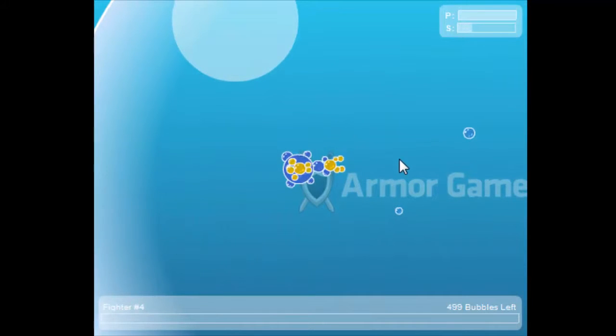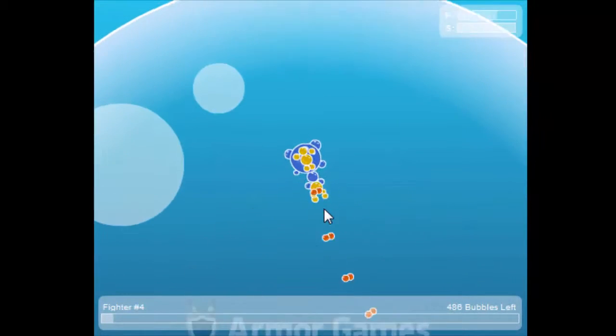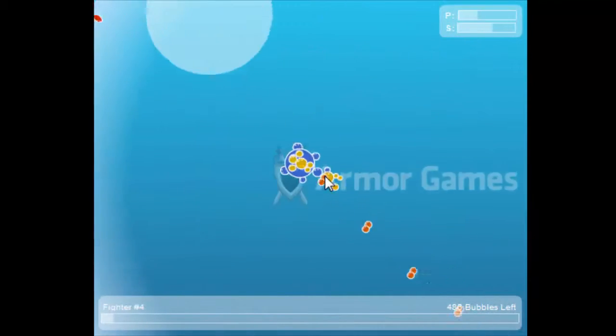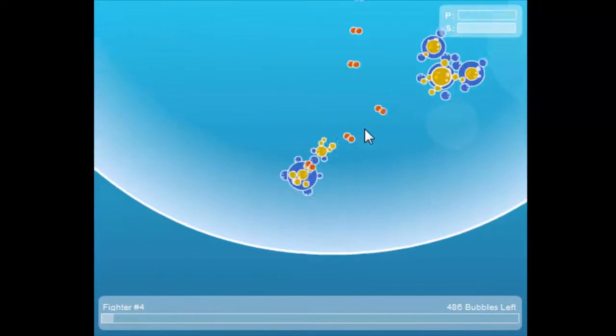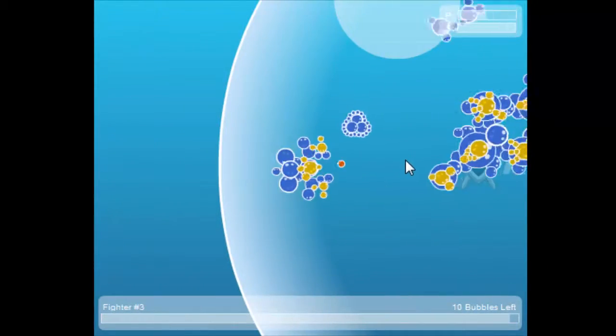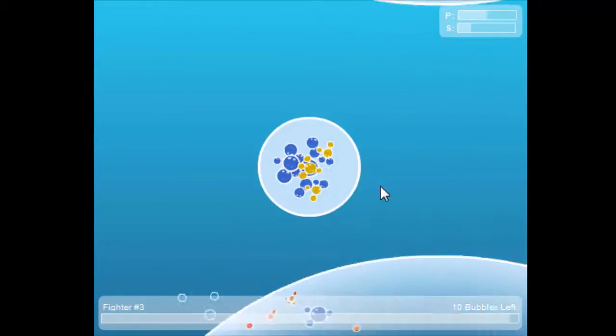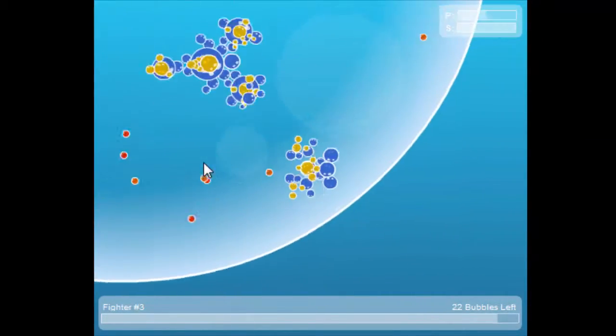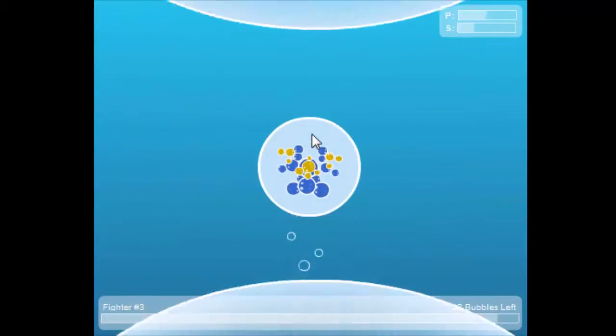The levels close to your spawn location all contain weak enemies that most of the time don't even shoot at you. The further you go from your start zone the harder the enemies get. If you move too quickly the enemies can overwhelm you and you will lose tank levels making it even harder to beat the enemies.